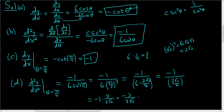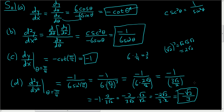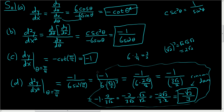To rationalize, we multiply by √2/√2. So we get negative 2√2 over (√2 · √2 = 2), giving us 3 times 2 in the denominator. The 2's cancel, and at long last we get negative √2/3. That is the concavity — the curve is concave down when θ = π/4. Dealing with all these fractions and square roots was the hardest part of the entire problem. I hope this helps.